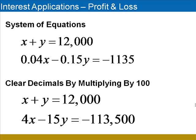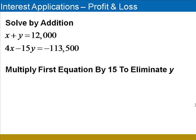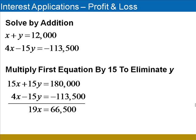Now we have a system that can be solved using the addition method. If we multiply the first equation on both sides by 15, the coefficients of the Y terms will be opposites. Therefore, when we add the equations together, we'll be left with one equation with the variable X. Multiplying the first equation by 15 on both sides, we get 15X plus 15Y, and on the other side, 15 times 12,000 is 180,000. When we add these two equations together, we're left with the equation 19X equals 66,500.